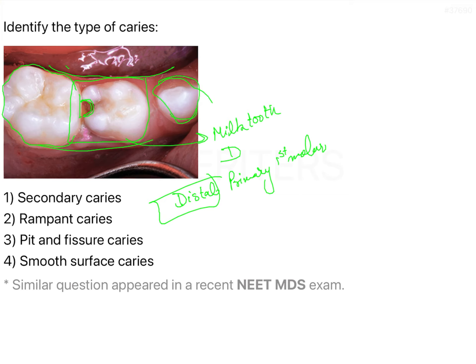You can see there is a carious lesion on the proximal surface. Now, what are the options? Secondary caries are generally seen below restorations — if you have an already-restored tooth. Since there is no restoration here, we can rule out secondary caries.